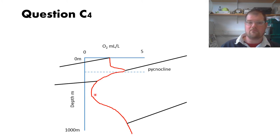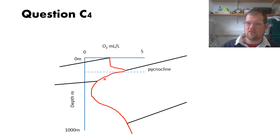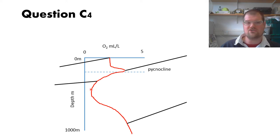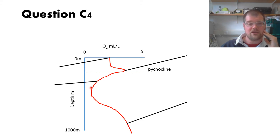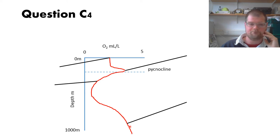Then below that you have a minimum — this could be labelled as an oxygen minimum zone. It doesn't have to go to zero; it very rarely goes exactly to zero in the open ocean. And then beneath that there's some increase in concentration, usually in the deep ocean.